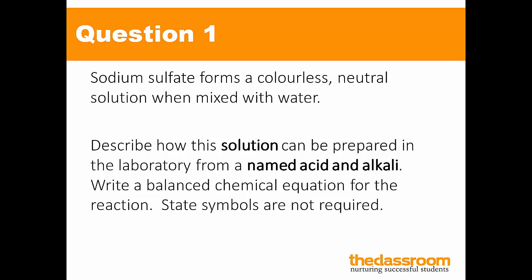The first question says: Sodium sulfate forms a colorless neutral solution when mixed with water. Describe how this solution can be prepared in the lab from a named acid and alkali. Write balanced chemical equations — state symbols not required. So we have to do quite a few things here. We need to describe, and we need to use specifically a named acid and alkali, and we need to write a balanced chemical equation. You need to make sure you do all three things in order not to lose any marks.